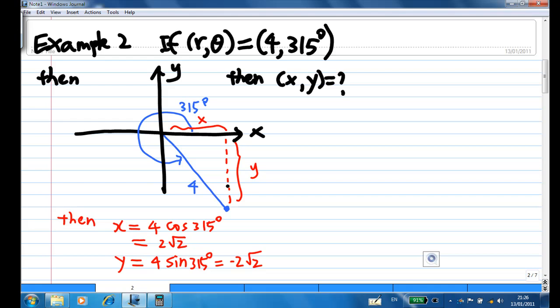Now you don't need to worry about positive and negative because the calculation will take care of it. For example, x is still 4 cosine 315 degrees, which is 2√2. Y is 4 sine 315 degrees, which is minus 2√2.